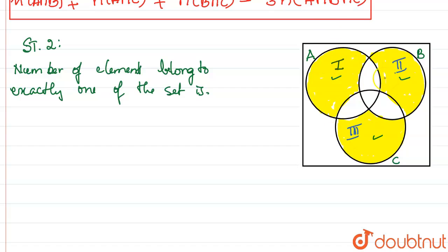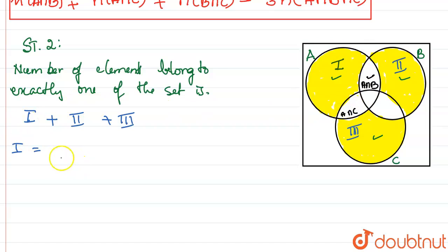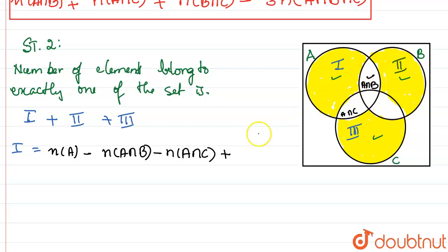We need to find the number of elements in parts 1, 2, and 3. Part 1 is the exclusive portion of A. From N(A), we subtract N(A∩B) and N(A∩C), but since we have subtracted the middle part twice, we add N(A∩B∩C) back once. So part 1 = N(A) minus N(A∩B) minus N(A∩C) plus N(A∩B∩C).